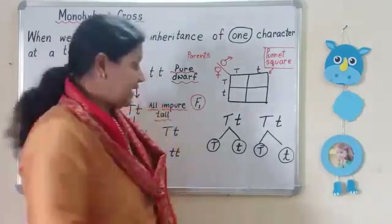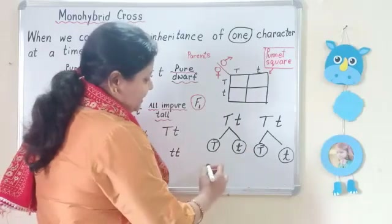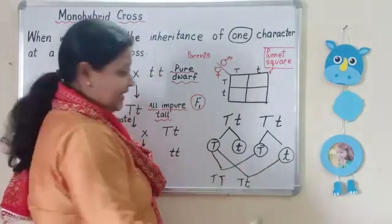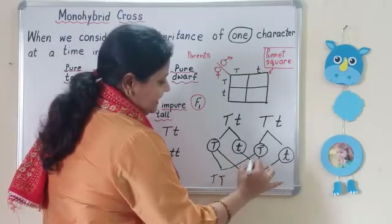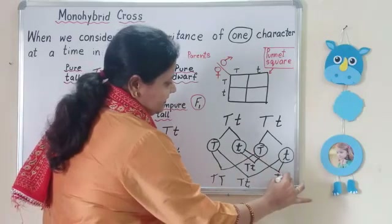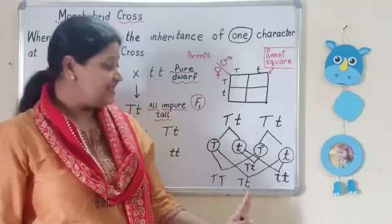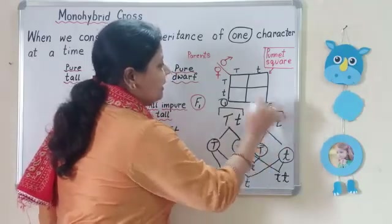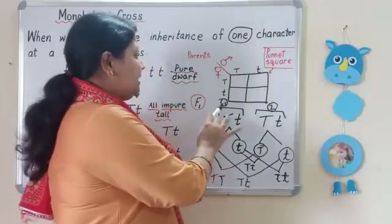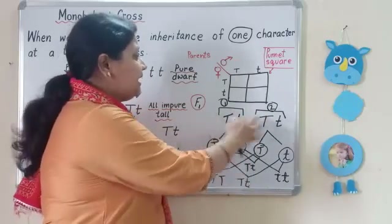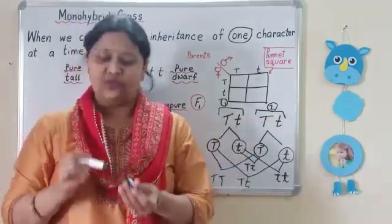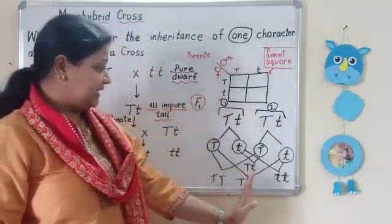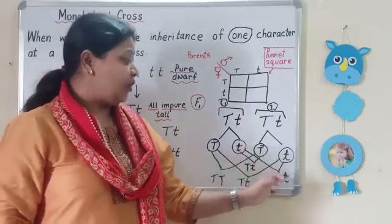Now we need to cross these gametes and see what combinations are formed. The combinations will be: capital T capital T, capital T small t, and small t small t. Remember that one gene comprises two alleles — so cross happens between genes, not between alleles of the same gene. The combinations are: capital T capital T, capital T small t, small t capital T (written as capital T small t, since we write the dominant allele first), and small t small t.